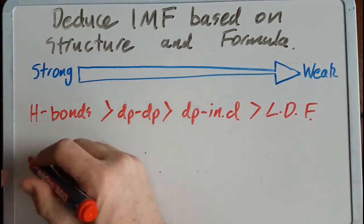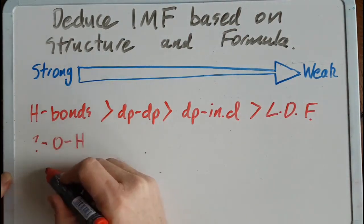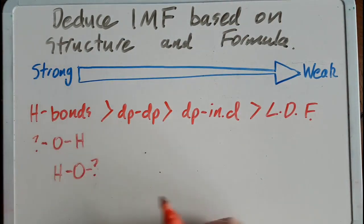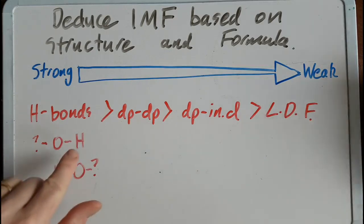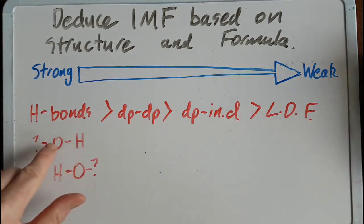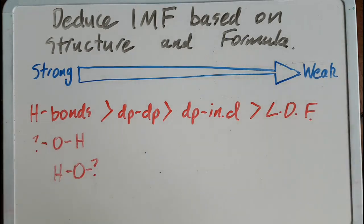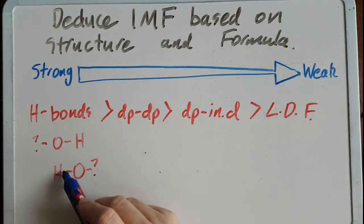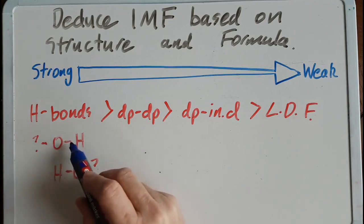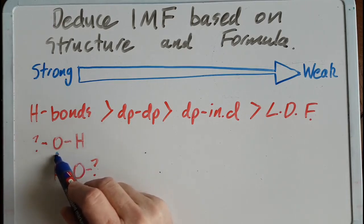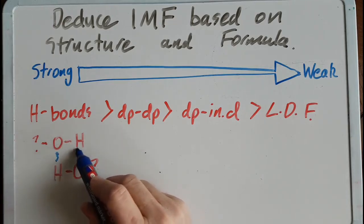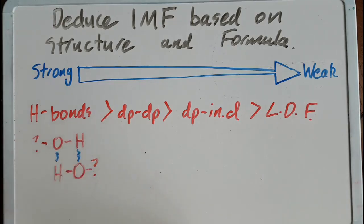A quick recap: if a hydrogen is directly bonded to an oxygen, nitrogen, or fluorine, then you have the potential for hydrogen bonds. Note that this is not the hydrogen bond itself — hydrogen bonds are intermolecular, between one molecule and the next.